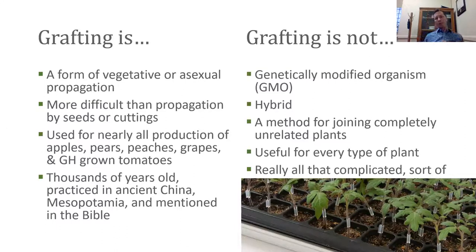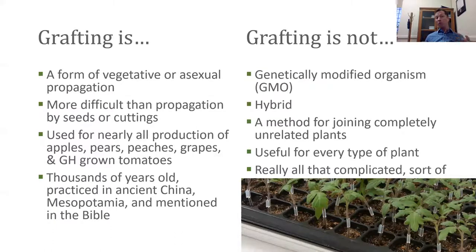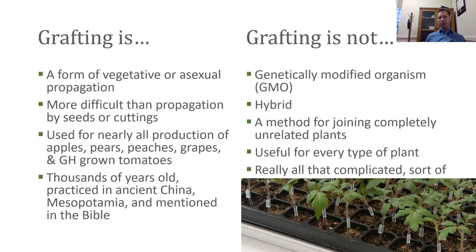Grafting is a form of vegetative or asexual propagation — other types include stem cuttings, leaf cuttings, root cuttings, division, and layering. Grafting is more difficult than propagation by seeds or cuttings, but it's something you can absolutely do at home. Grafting is used for nearly all production of apples, pears, peaches, grapes, and even greenhouse-grown tomatoes. If you're going into the grocery store this time of year and buying tomatoes, very likely they're produced in a greenhouse, and more likely than not they are grafted tomatoes. Grafting is also thousands of years old — it was practiced in ancient China and Mesopotamia, and is even mentioned in the Bible.